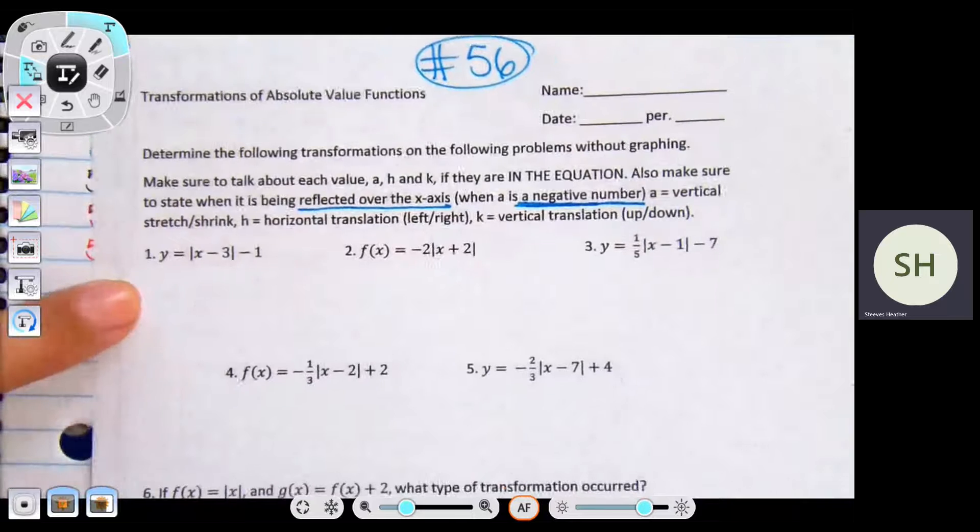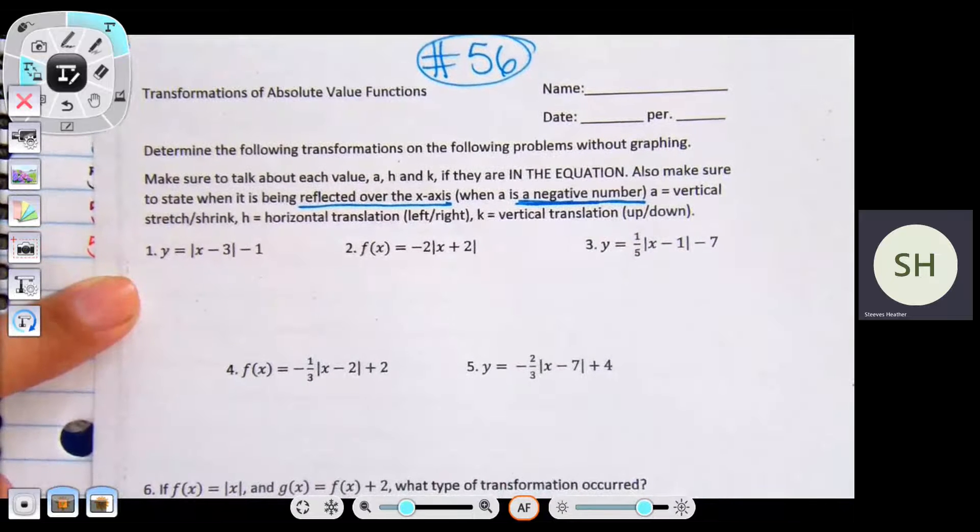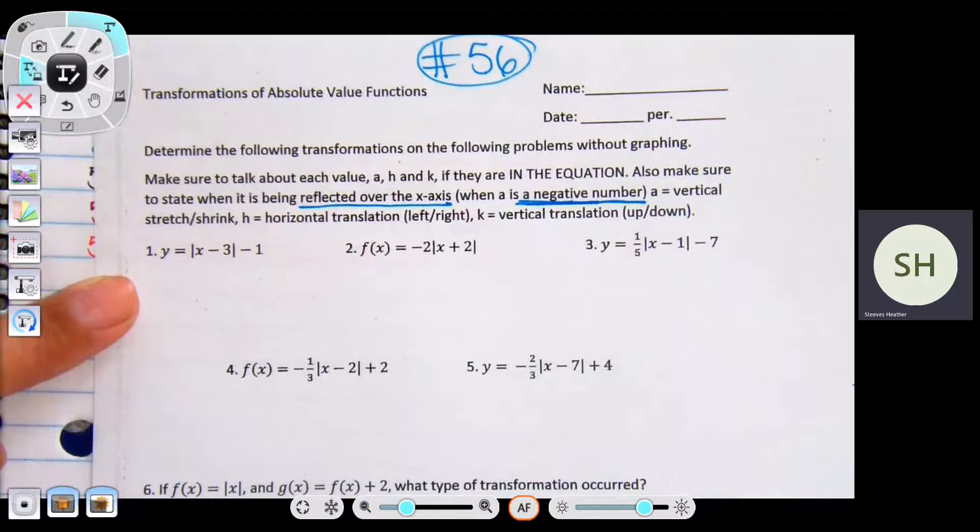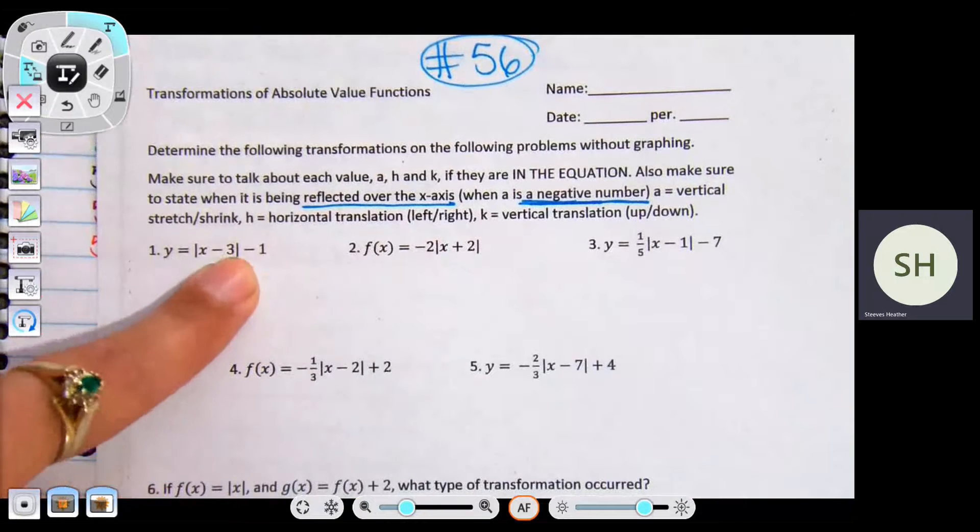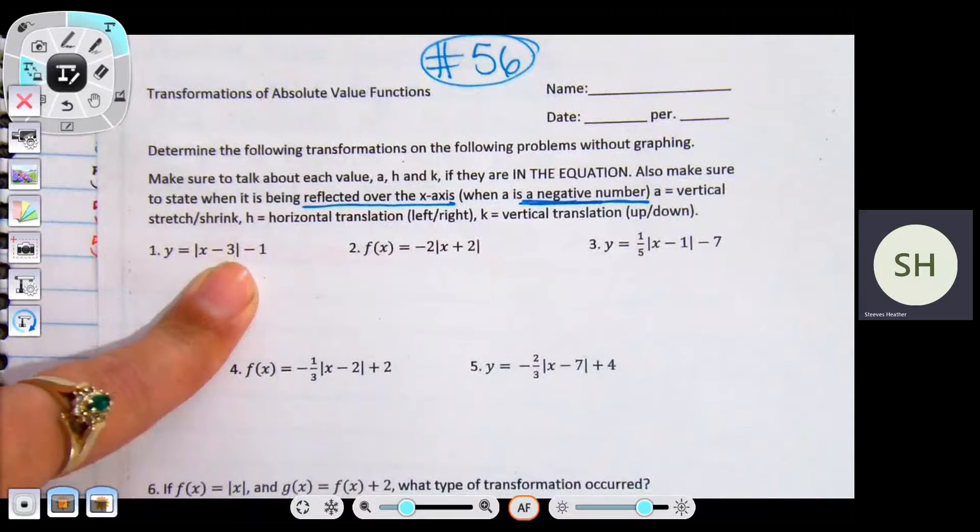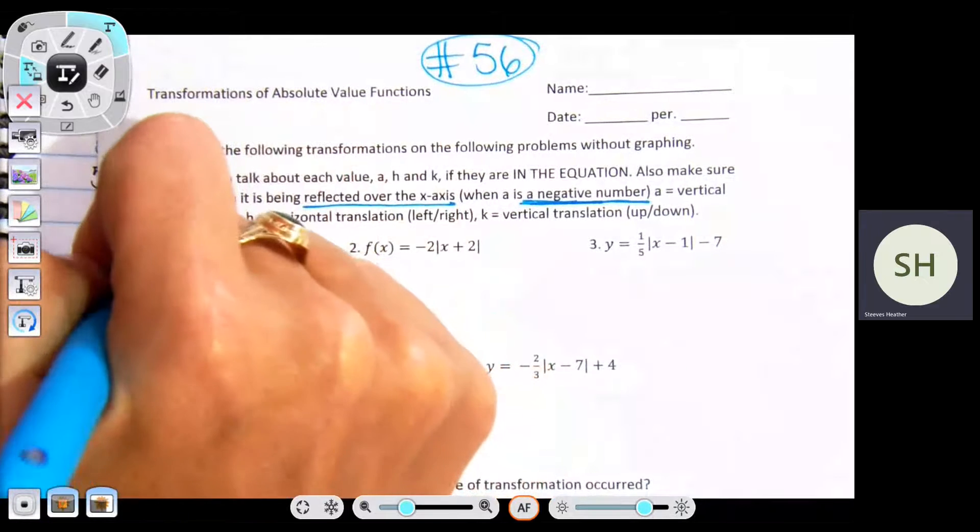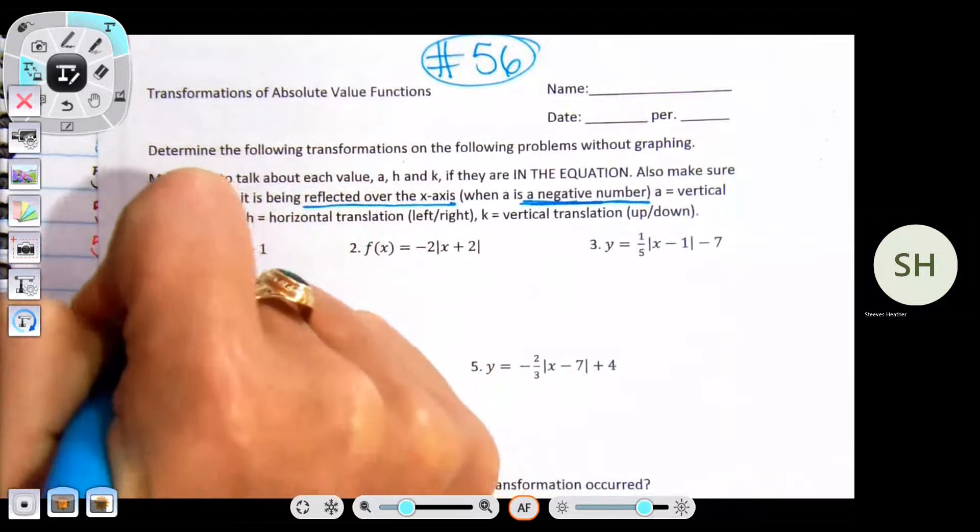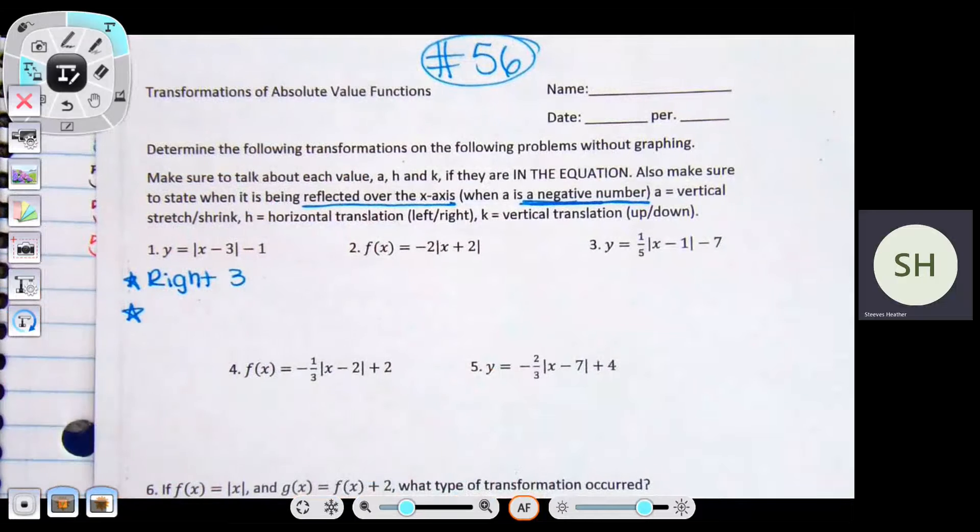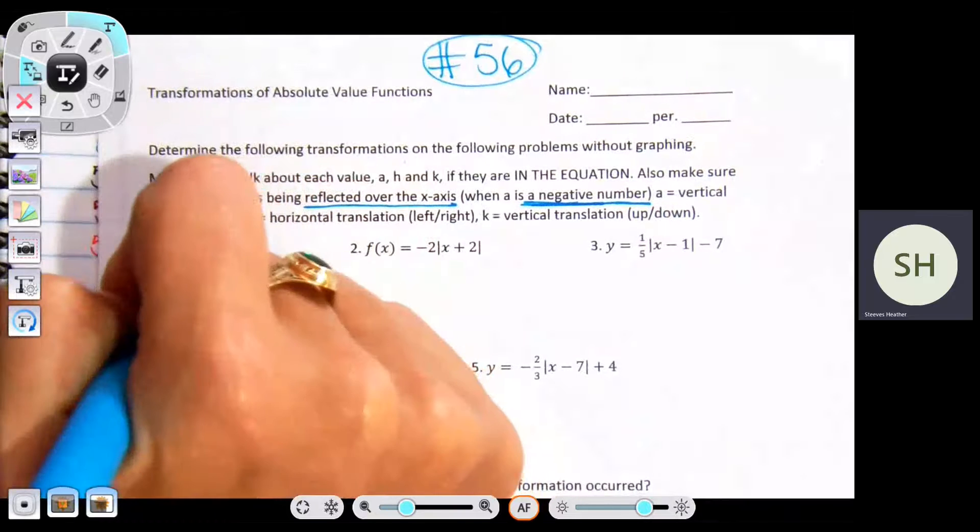In this case there are two numbers, h and k. Since a is not written, you do not talk about a. But what is a? One. We're not going to talk about it. We're only going to talk about the numbers that are actually in the equation. So I have three and I have one. The three represents left and right. Which way specifically? Right, because it is opposite of the brackets. So put right three. The negative one represents going down one.